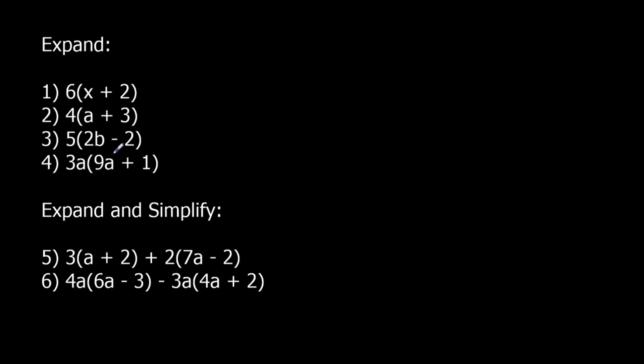Okay, so number 1, we've got 6 times x, 6x, and 6 times 2, 12. Here I've got 4 times a, 4a, and 4 times 3, 12. 5 times 2b, 10b. 5 times negative 2, negative 10. 3a times 9a. 3 times 9 is 27. a times a is a squared. And 3a times 1, well, just 3a.